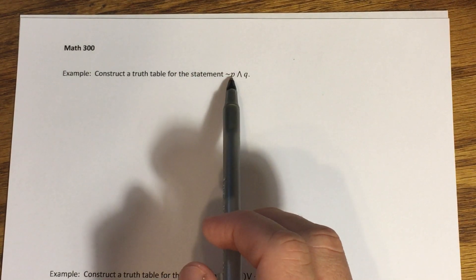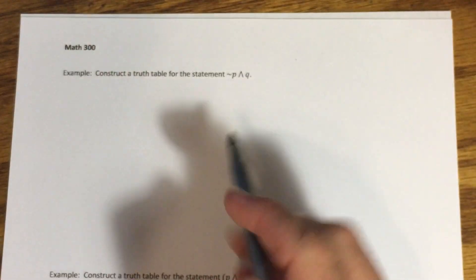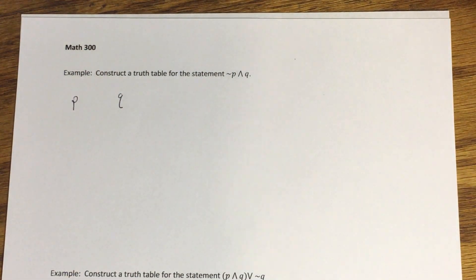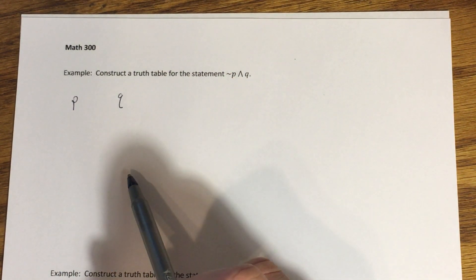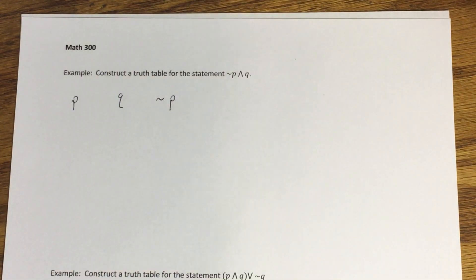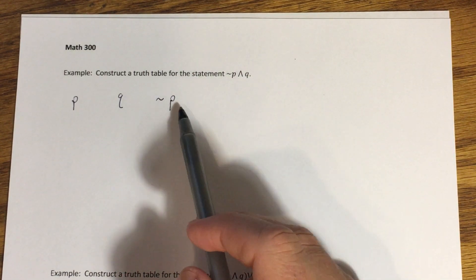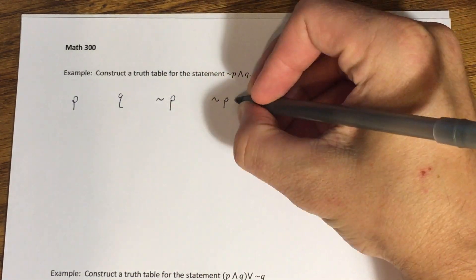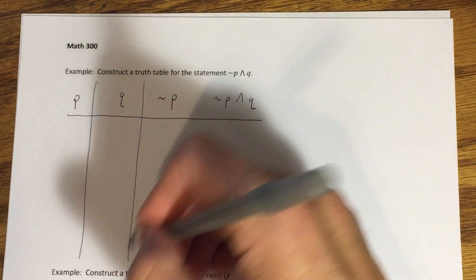Let's look at this compound statement: 'not p and q.' How do you construct a truth table for this? We have two component statements, p and q, each needing their own column. Next, any negations that appear in the compound statement should come next — so I need a column for 'not p.' That's the only negation. Finally, we build up to the compound statement 'not p and q,' giving us four columns total.